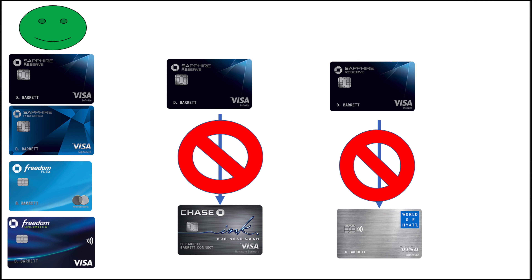Let's talk about what you can and can't product change to. Card issuers have rules on what can be product changed to what. With the Sapphire Reserve example, Chase allows you to product change or downgrade to any Ultimate Rewards earning card in their lineup — so the Sapphire Reserve can become the Sapphire Preferred or move to one of the Freedom Flex cards. However, it needs to stay in the personal card lineup if it was a personal card. You can't take the CSR and change it into an Ink Cash card, and you can't take the CSR and change it into a Southwest card, since those are different product families earning different types of point currency.